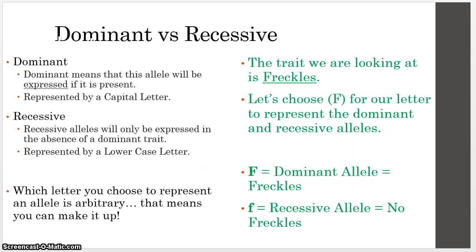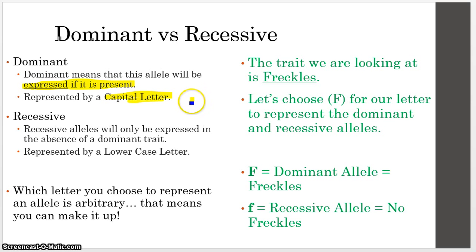That brings in the idea of dominant and recessive. Dominant alleles are alleles that will be expressed if they are present. If either your mom or your dad gave you a dominant allele, it is going to be the one expressed in you. Dominant alleles are always represented by a capital letter — we don't have to write out the full DNA sequence, we just use one capital letter. Recessive alleles, on the other hand, will only be expressed in the absence of a dominant allele. They are represented by a lowercase letter.